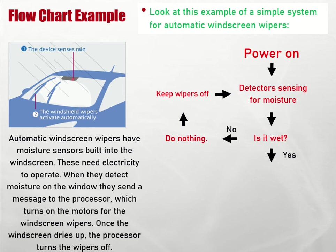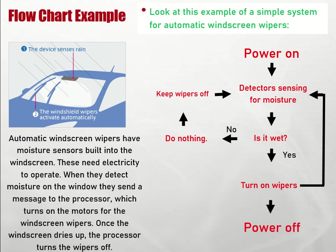If the answer is yes — if the windscreen is wet — then the wipers are turned on, and this feeds back into a cycle. Finally, at some point, the power is turned off. Notice there are loops here: one going back around from the no branch, one going back from the yes branch. The system is thinking to itself, making a decision — that's what makes it automatic.